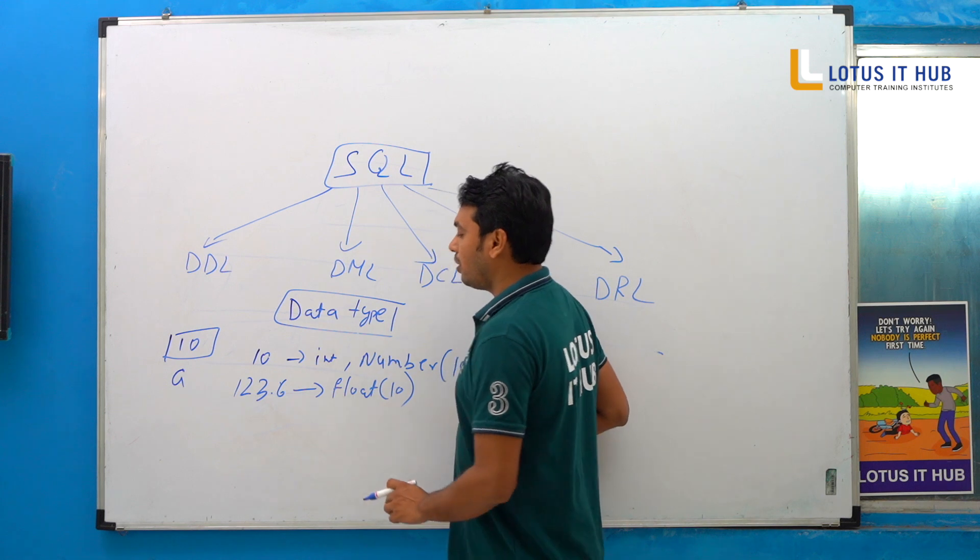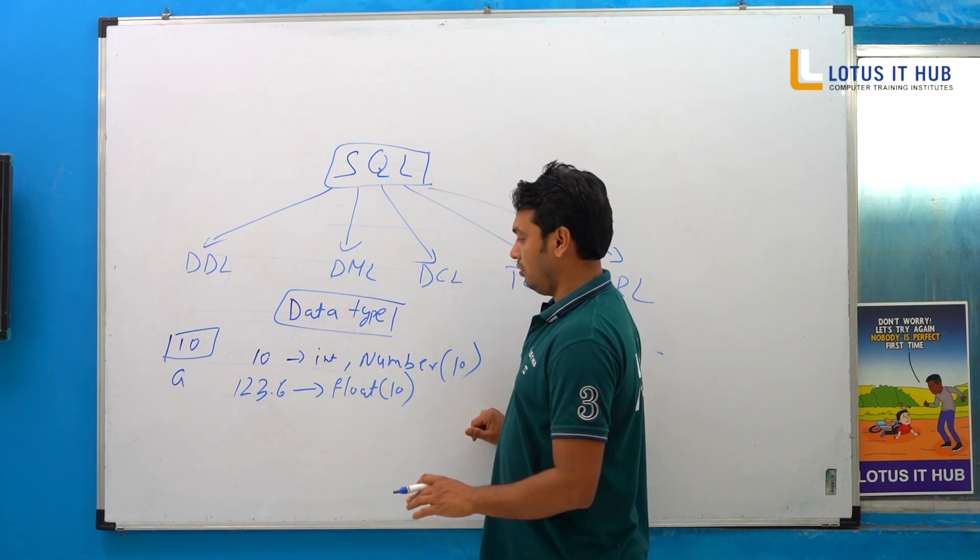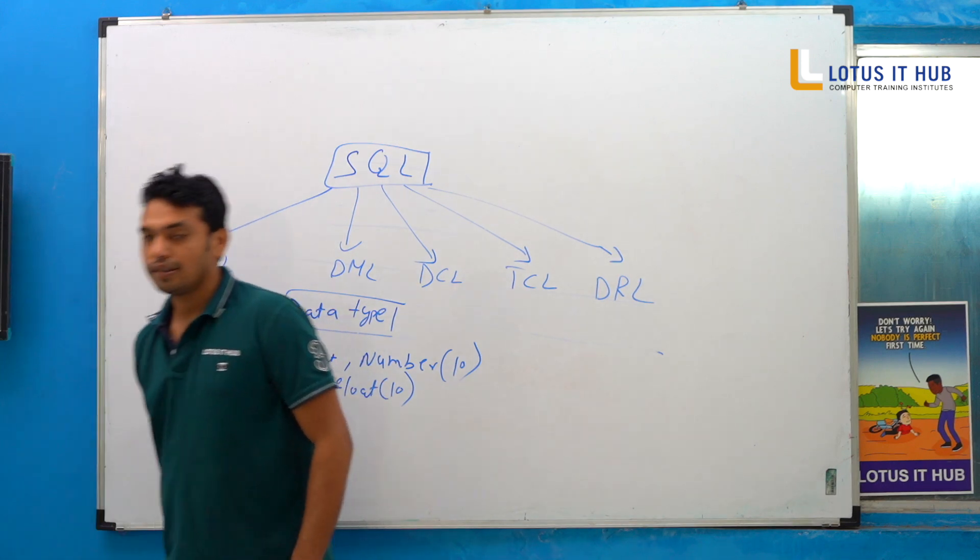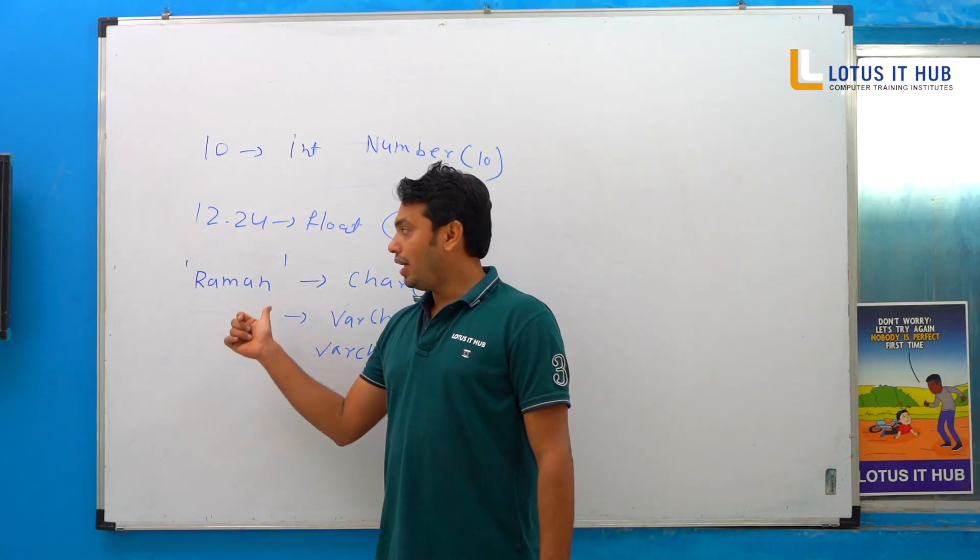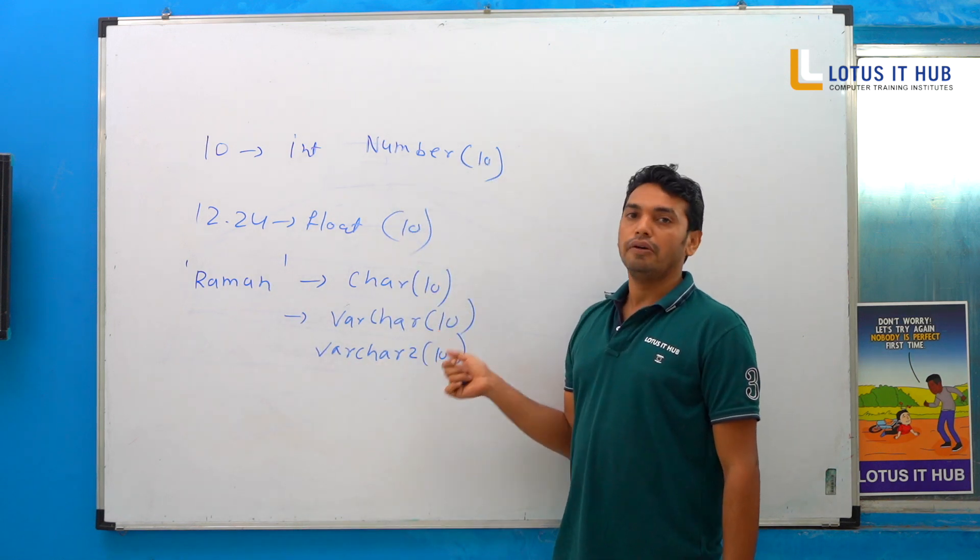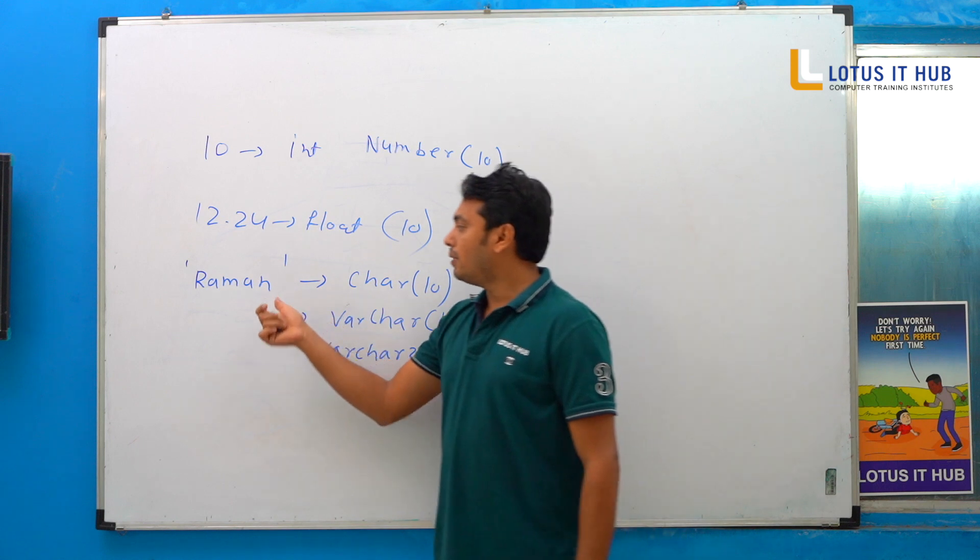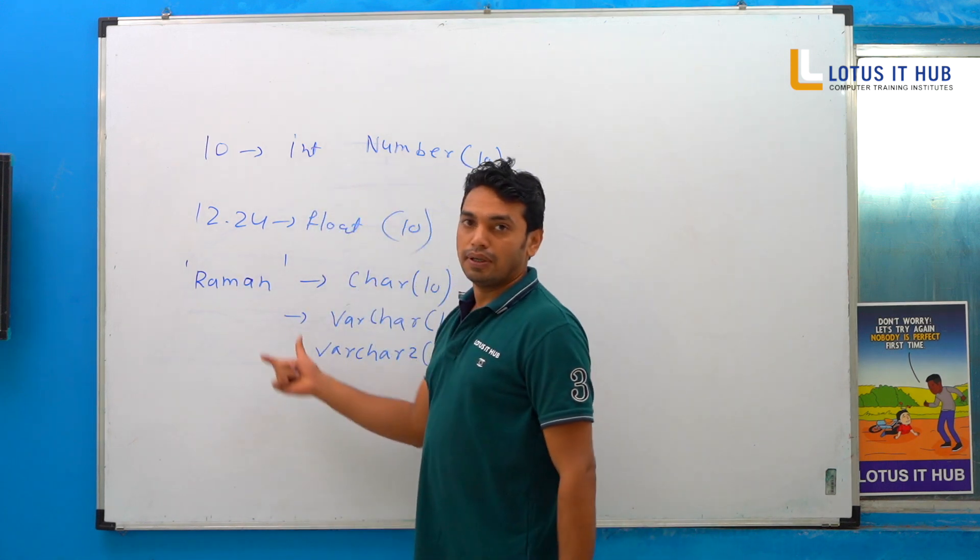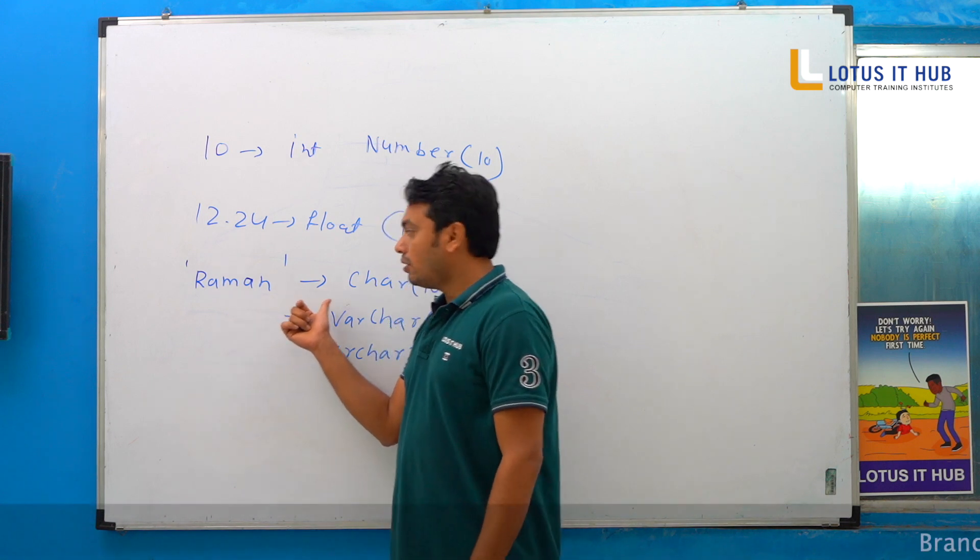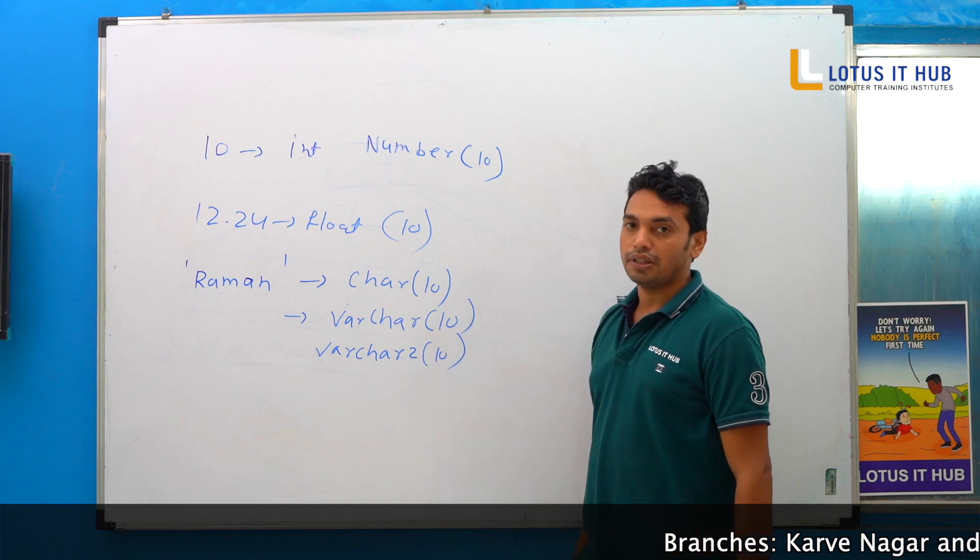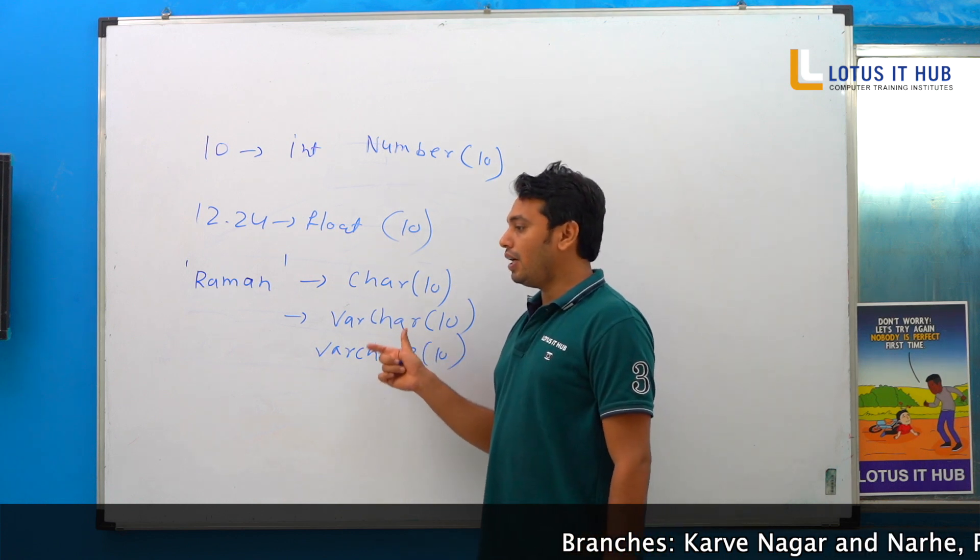Then one of the important concepts in your SQL we will discuss: how to use it. Now if we think about, we are coming to the difference between CHAR, VARCHAR, and VARCHAR2. Where it is useful? Raman is suppose my character. Raman is suppose our name. So Raman I can store by CHAR(10), VARCHAR(10), VARCHAR2(10). Some of the time people ask, sir, is it 10, 10, 10? Can we change this size? Yes, we can change.